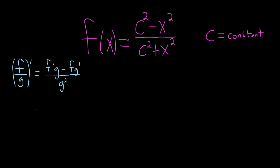Let's go ahead and use it in this problem. So f prime of x. We should keep in mind that in this problem c is a constant, so the derivative of c is 0. c squared is also a constant, so its derivative will also be 0. When we take the derivative, the c squared term is going to be 0.